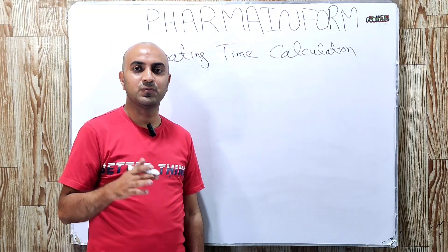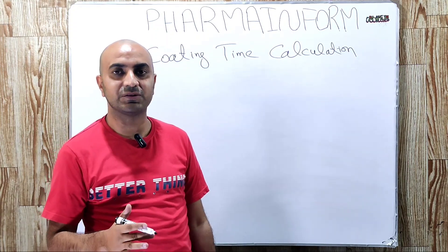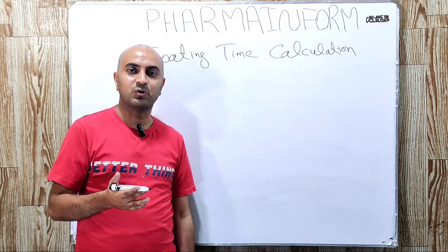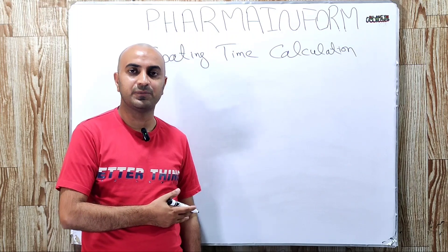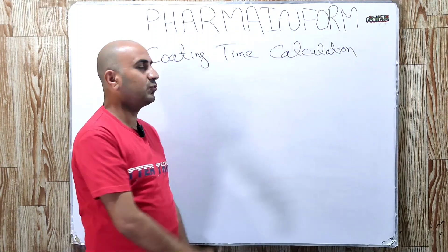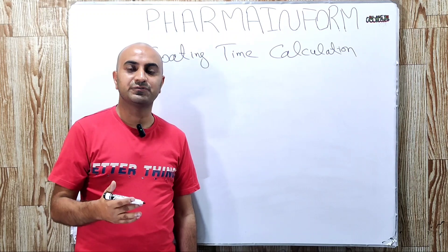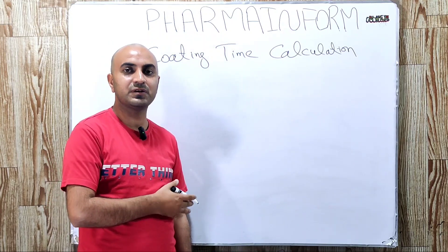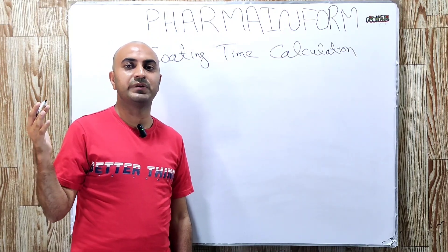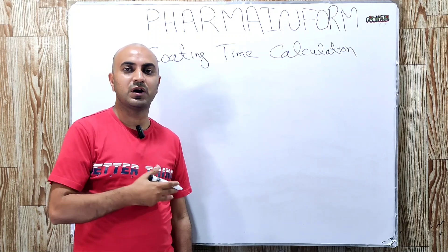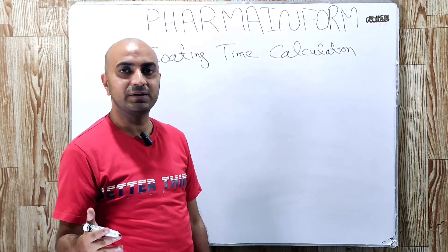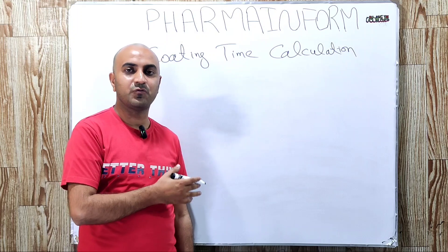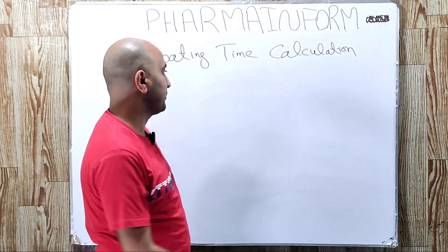I will teach you in this video a very short and basic method that you can apply in your practical life to calculate and validate your coating times. If you want to learn about spray gun validation, watch that video — the link is given in the description. But I will teach you a basic trick you can apply immediately to calculate the coating time for any specific quantity of suspension.